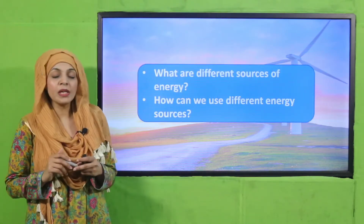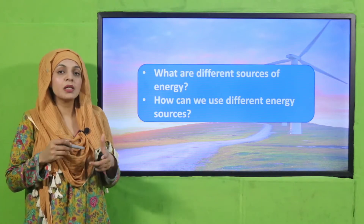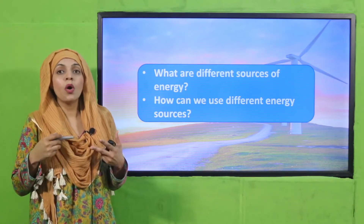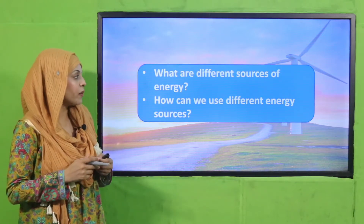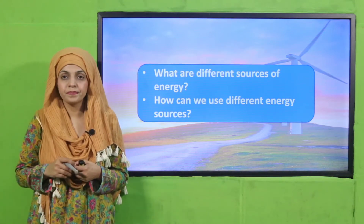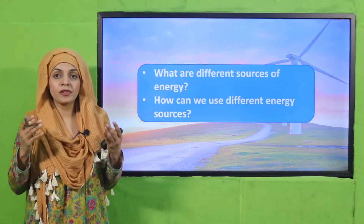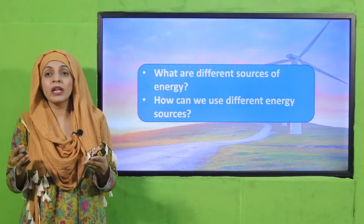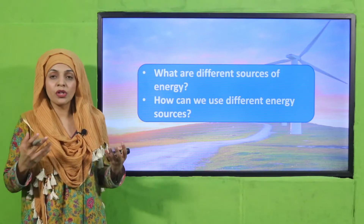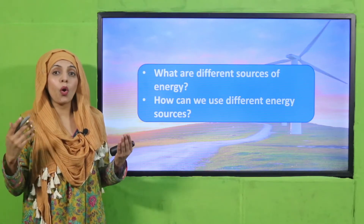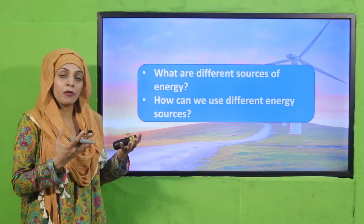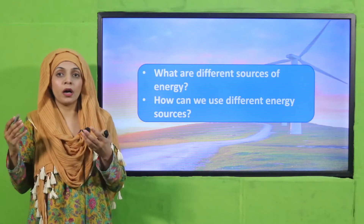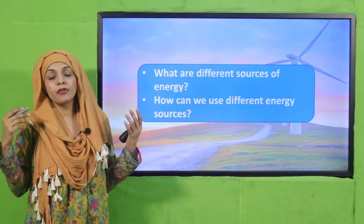Let's quickly recap what we did in the previous lecture. What are the different sources of energy? Sun, wind, water, coal, oil, and gas — these are all natural energy sources. We can use the heat and light of the sun to generate electricity, wind energy to generate electricity, and water to generate electricity. We can use coal, oil, and natural gas for different purposes like fuel for vehicles, cooking, and heating.